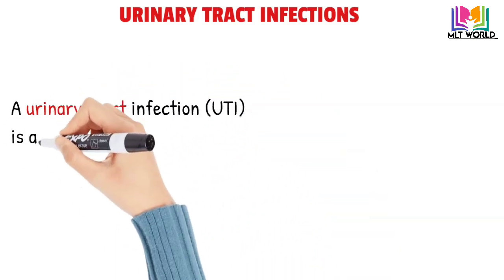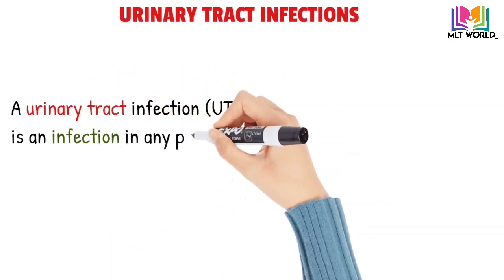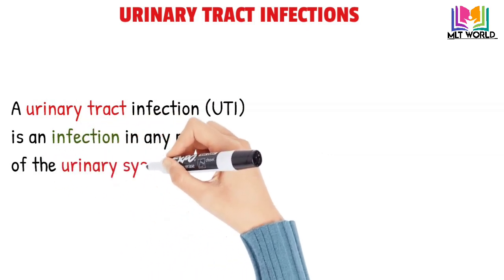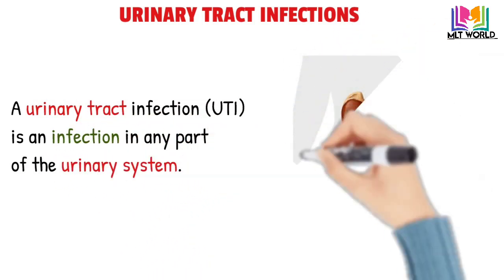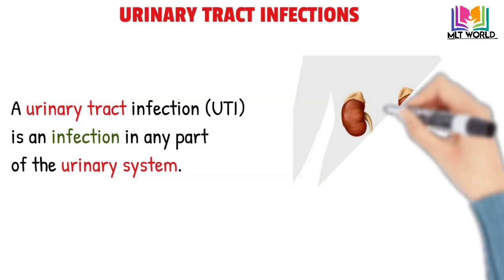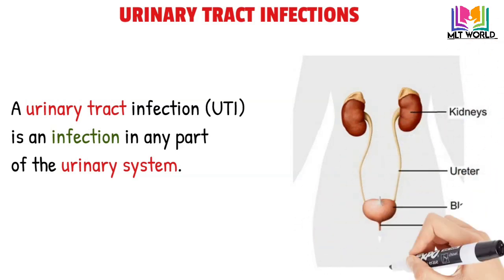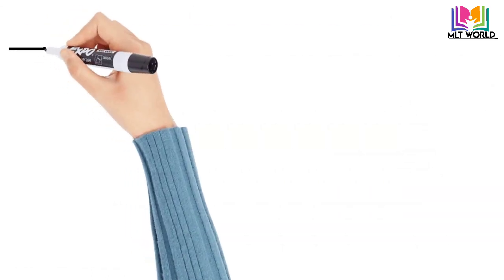A urinary tract infection is an infection in any part of the urinary system. The urinary system includes kidney, ureter, bladder, and urethra, and most infections involve the lower urinary tract, like the bladder and urethra.